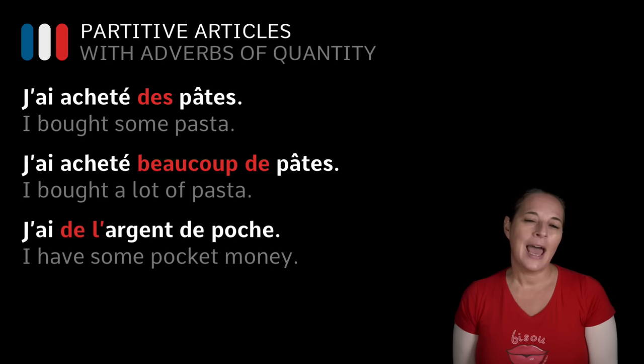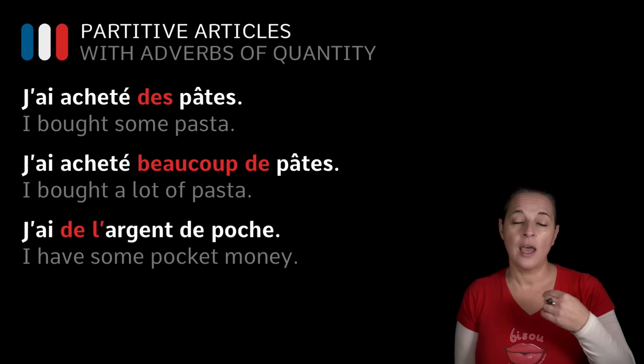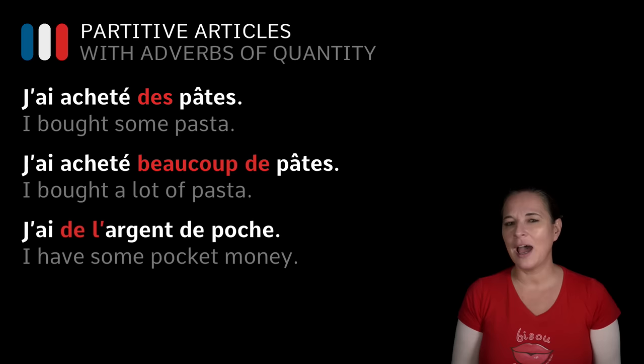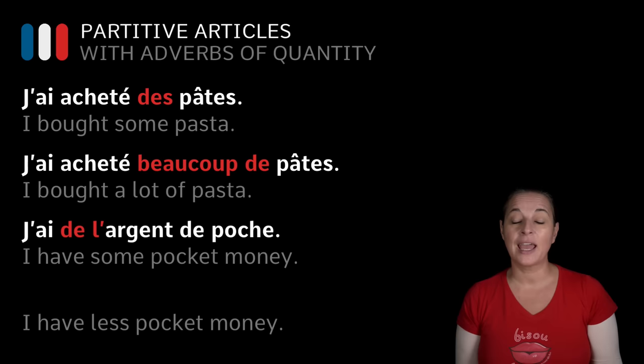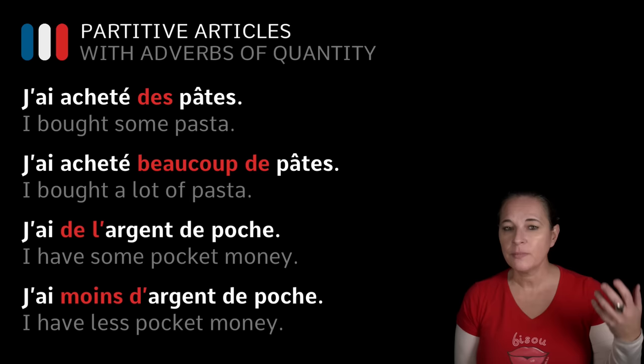And to finish: what happens when we use DE L' apostrophe in a sentence and want to use an adverb of quantity? 'J'ai de l'argent de poche' — I have some pocket money. But we want to say I have less pocket money using MOINS. So: 'J'ai MOINS D'argent de poche' — I have less pocket money.